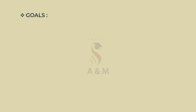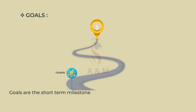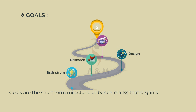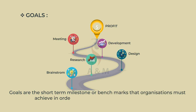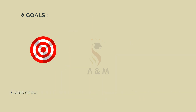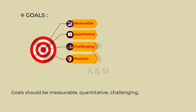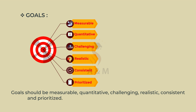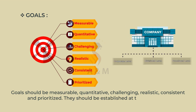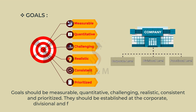Now let us know about goals. Goals are the short-term milestones or benchmarks that an organization must achieve in order for long-term objectives to be reached. Goals should be measurable, quantitative, challenging, realistic, consistent and prioritized. They should be established at the corporate, divisional and functional levels in large organizations.